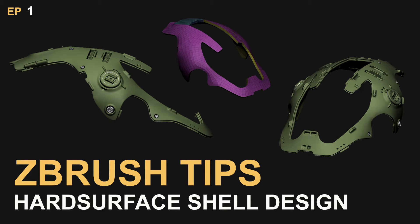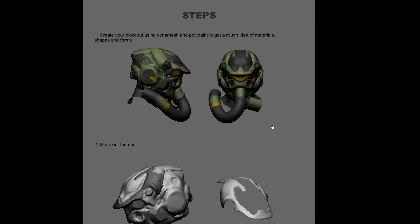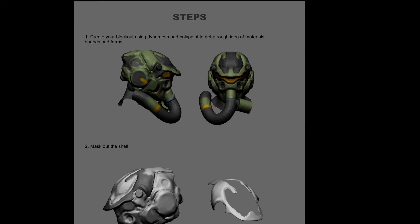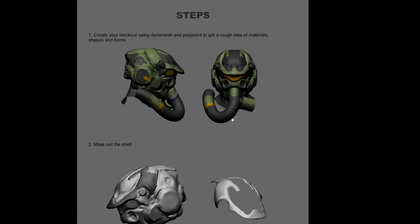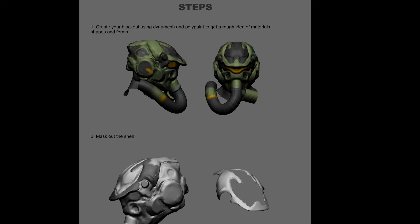Hey everyone, I just wanted to give you a quick example of how I approach modeling this kind of shell using ZBrush. Here are some of the steps involved — I'll go through the steps first and then you can watch the timelapse of the process to get a better idea. I start with the blockout using dynamesh and polypaint to get a rough idea.